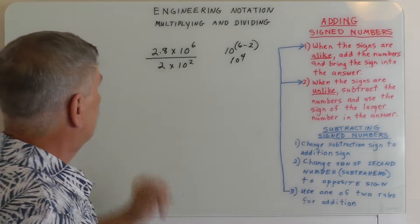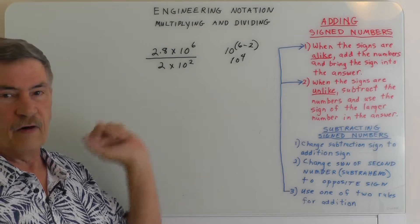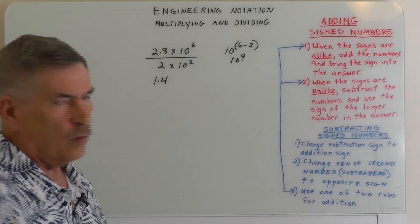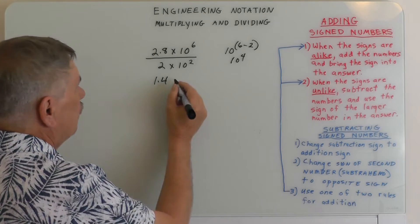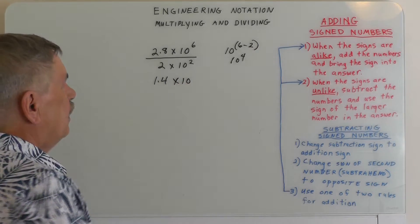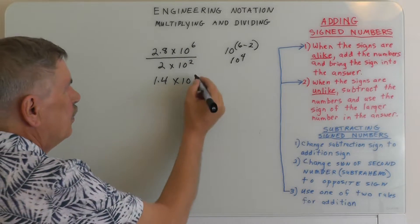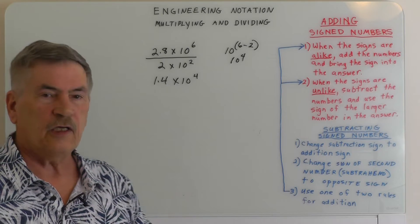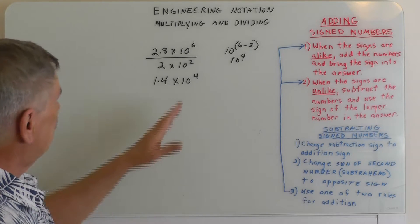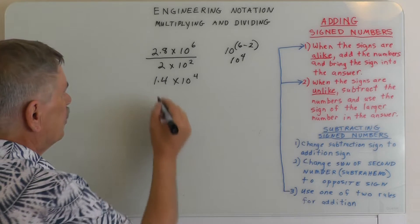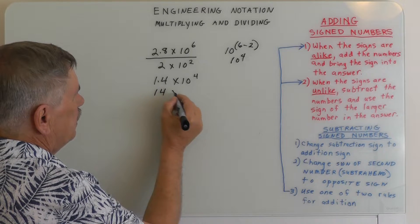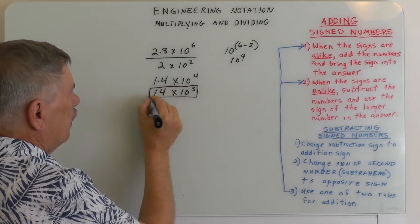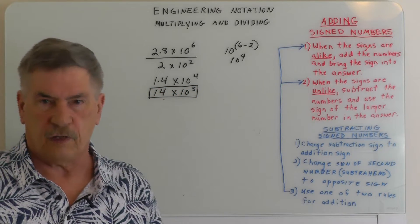Let's see what we've got. If I take 2.8 and divide it by 2, doing the mantissa first, we get 1.4. So times 10 — doing my subtraction, 6 minus 2 — I get 4, so 10 to the fourth. Now we want to put this in engineering notation. Making this smaller makes this bigger, so this is going to be 14 times 10 to the third power. That's the answer for that one.